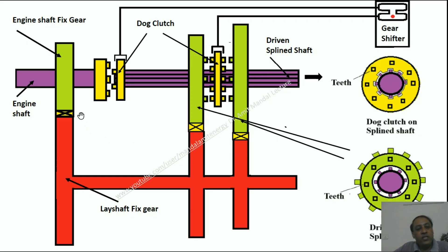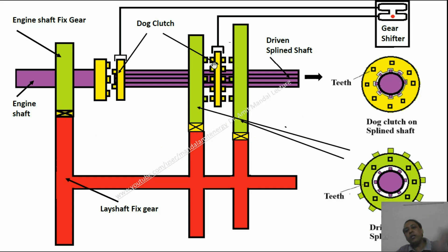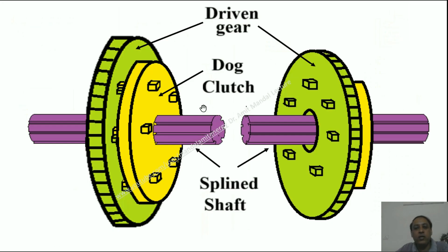What we see here is that all the gears are always in meshing conditions — always in meshing conditions. Only the dog clutch is shifted so that a particular gear's power can be transferred to the driven shaft.